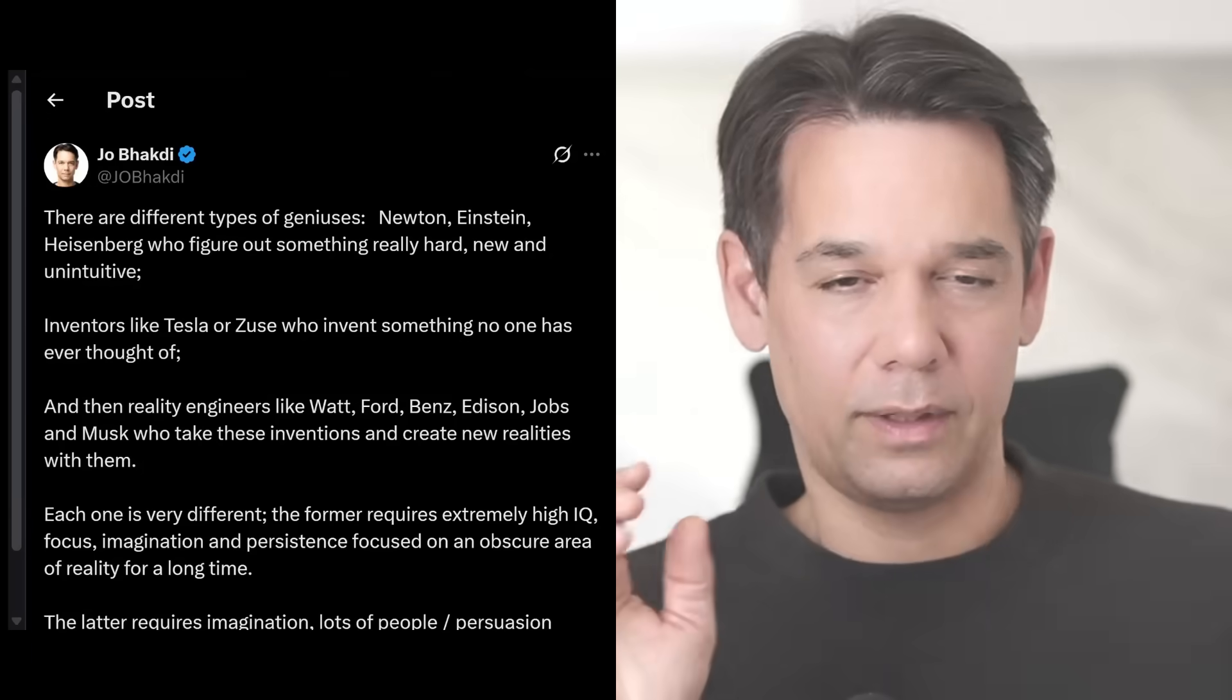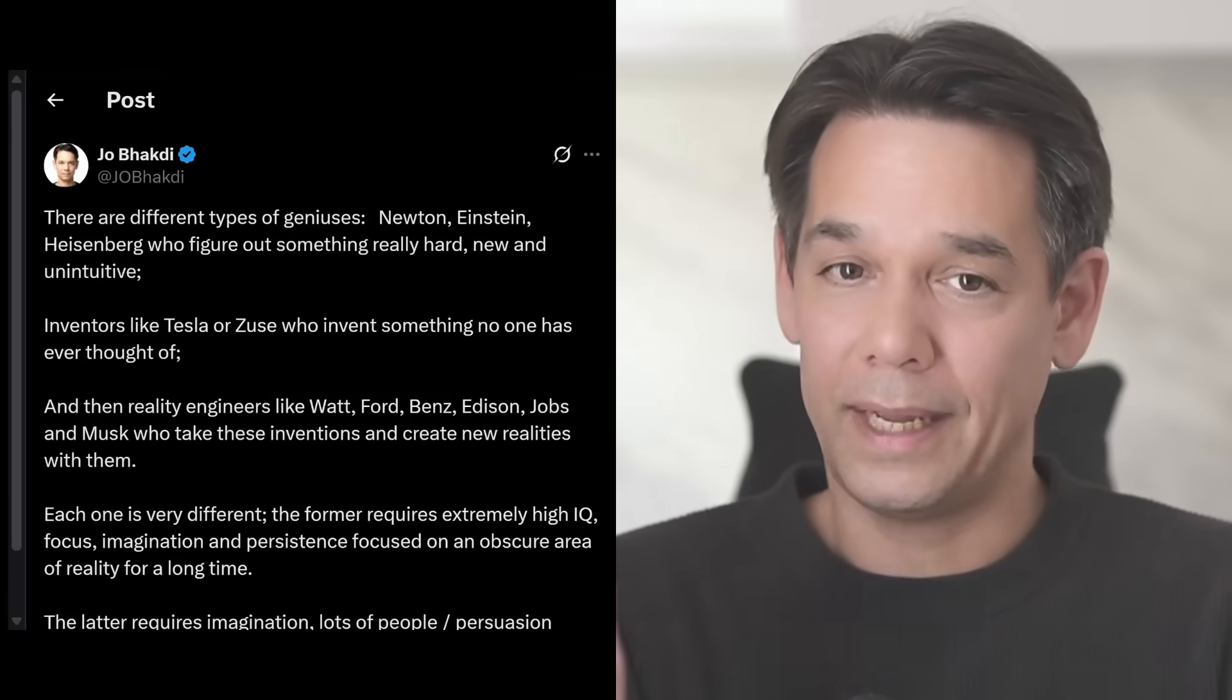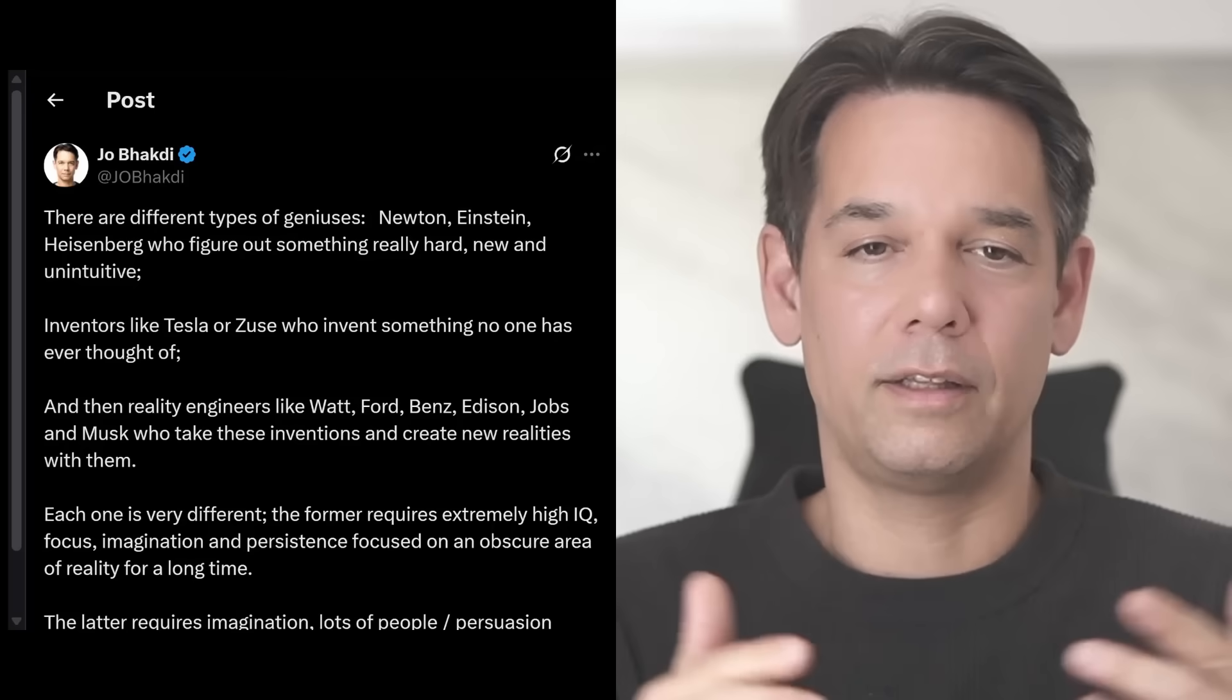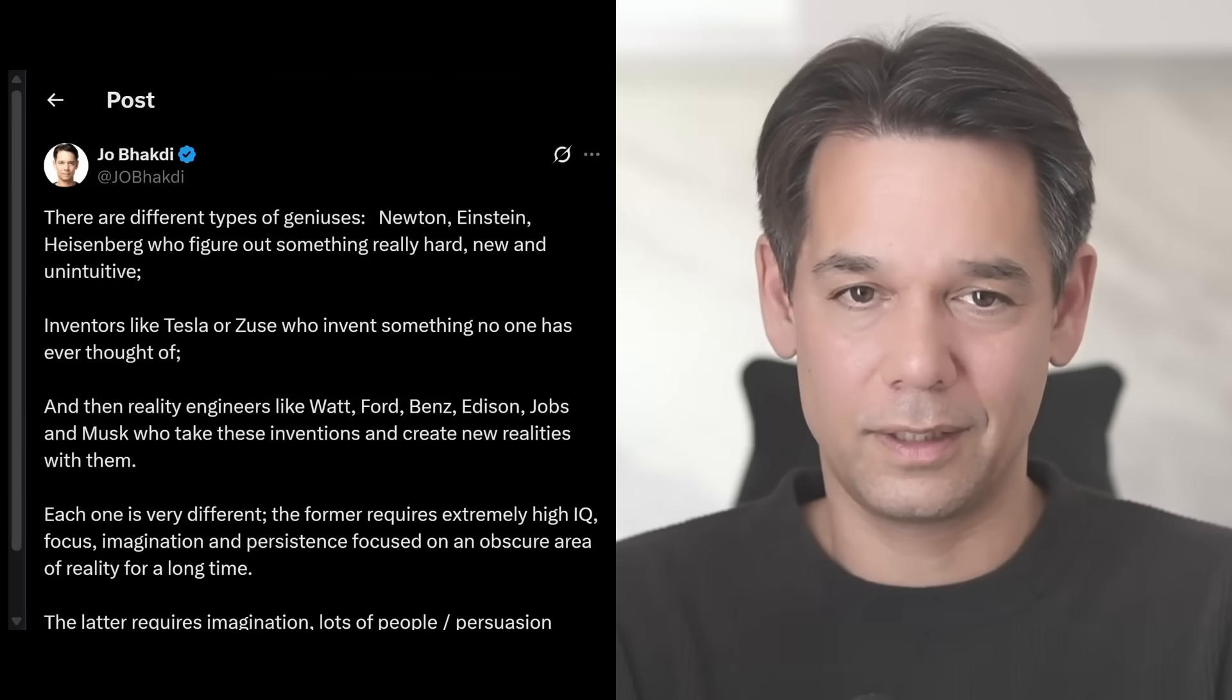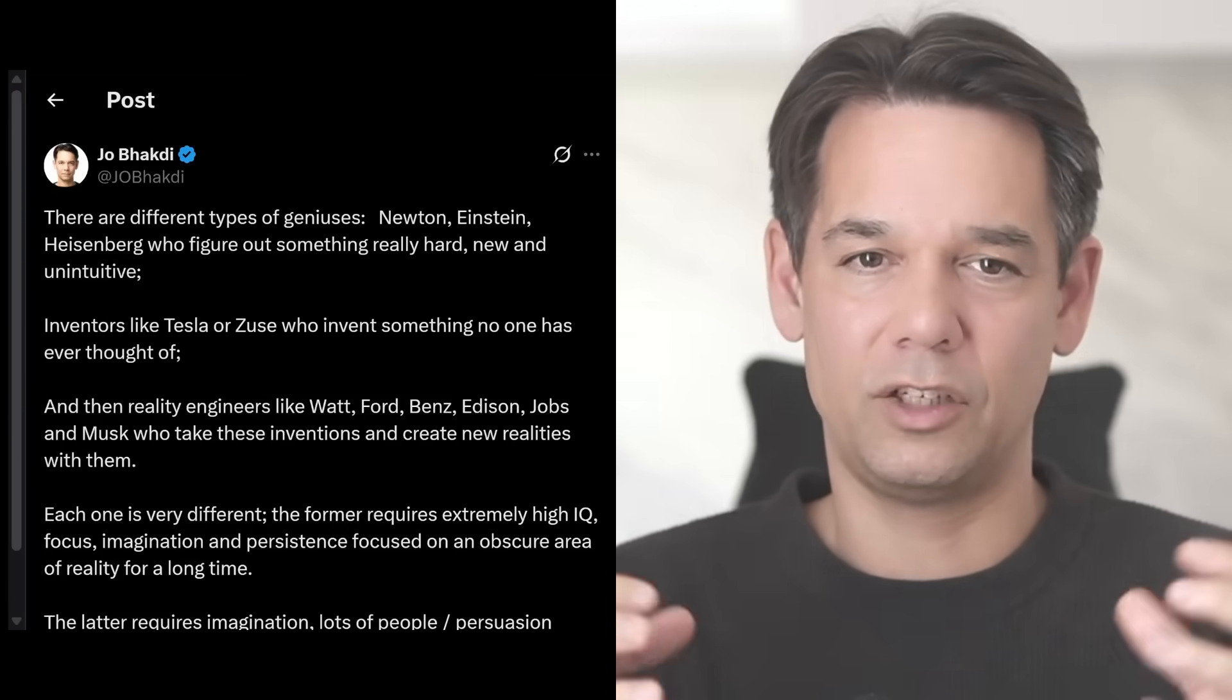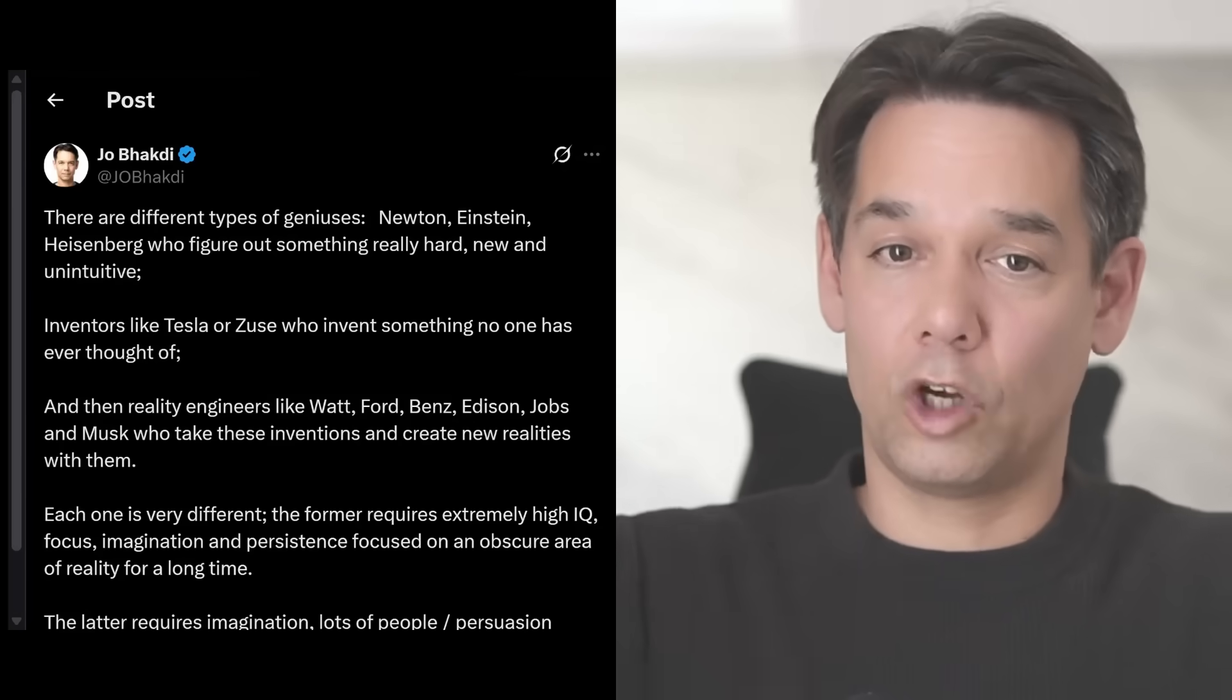So the reality engineers, what they do, and that is Elon Musk, that is Ford, that is Benz, the inventor of the car, the combustion engine, Ford, the inventor of the conveyor belt and mass production, and then Edison, of course, the light bulb and the energy systems, the electricity systems and the power plants. What people forget about Edison, he wasn't so much an inventor. He was just accumulating the inventions and build systems around it that actually solve big problems.